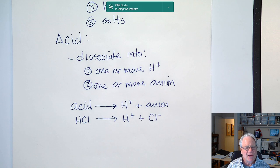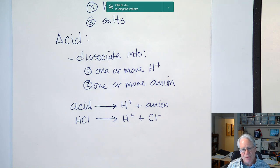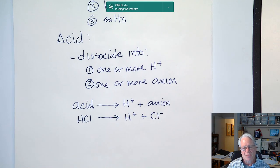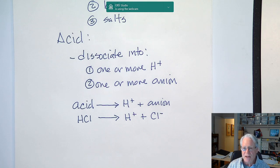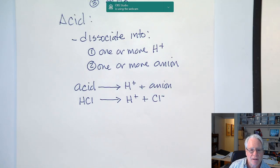Acids are a very important part of our biology. Particularly when we get into the respiratory system and the urinary system, you're going to spend time talking about acids. Your body is constantly producing acids as a normal byproduct of metabolism, and particularly the hydrogen ions can be very disruptive to the structure of proteins. One of the things your body is constantly dealing with is the production of hydrogen ions and how to manage them.